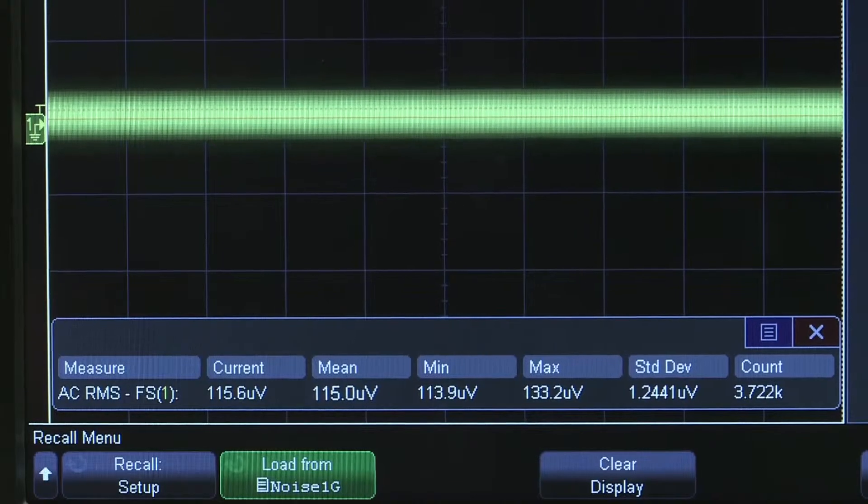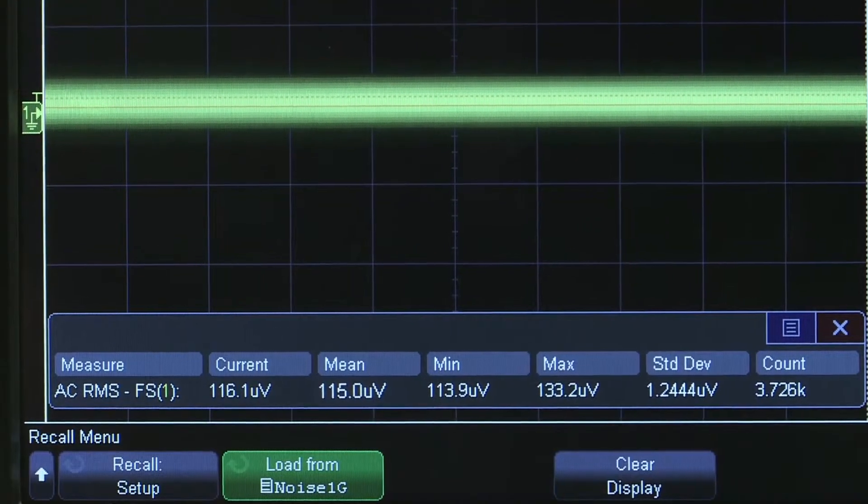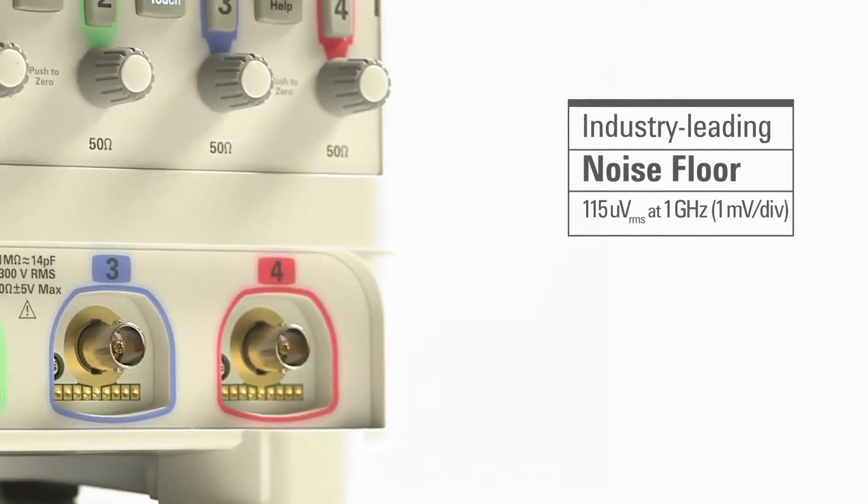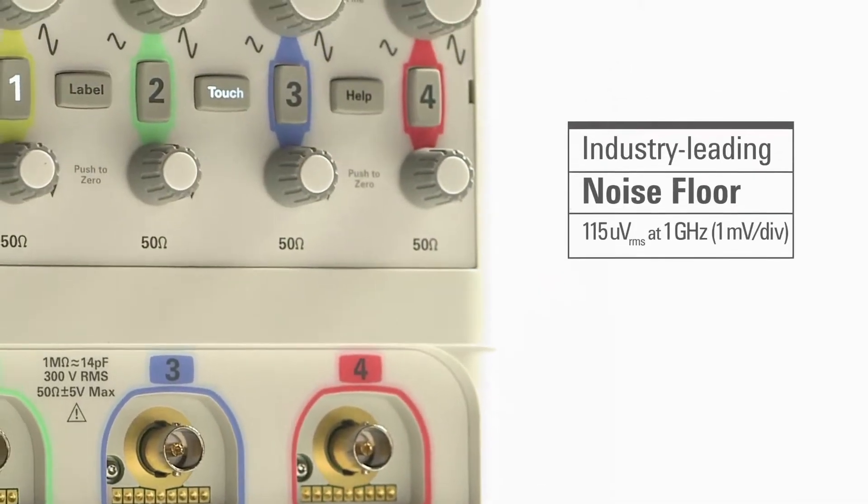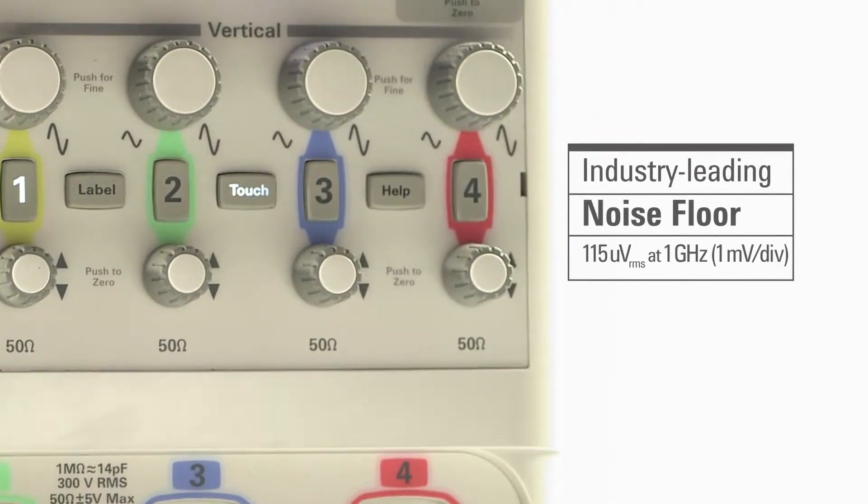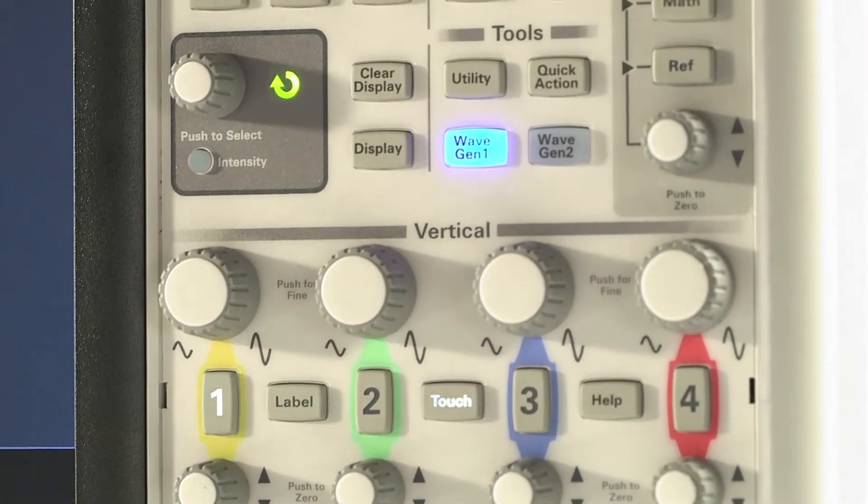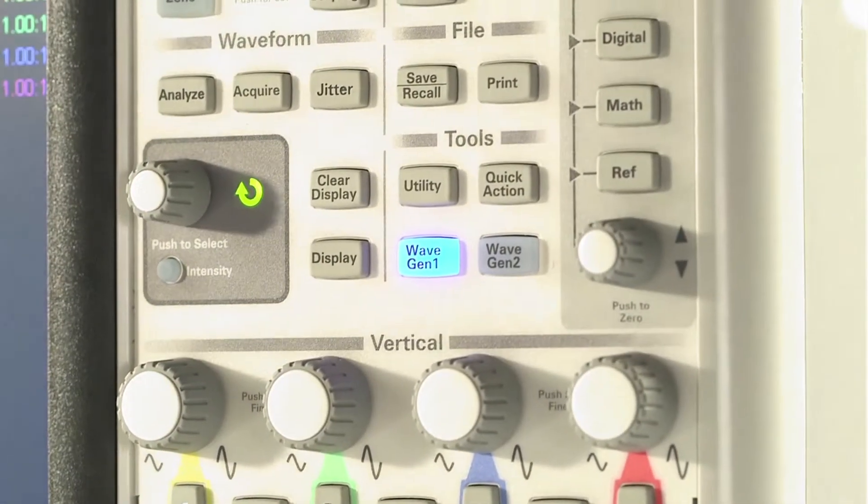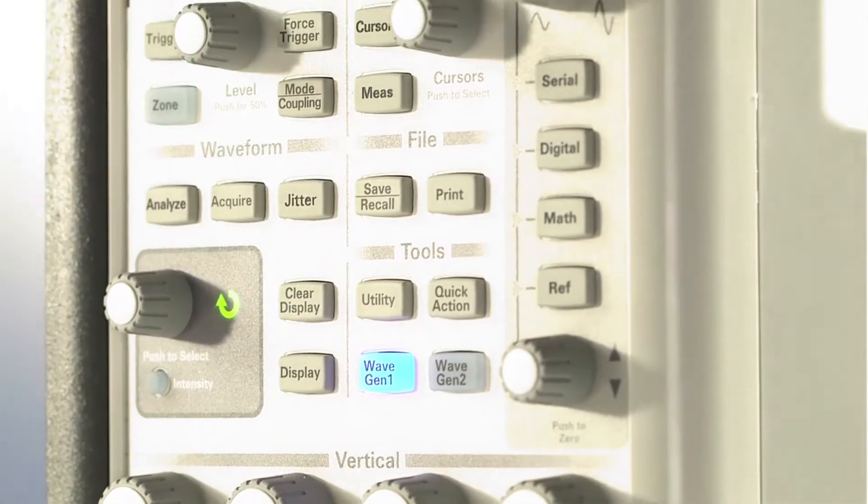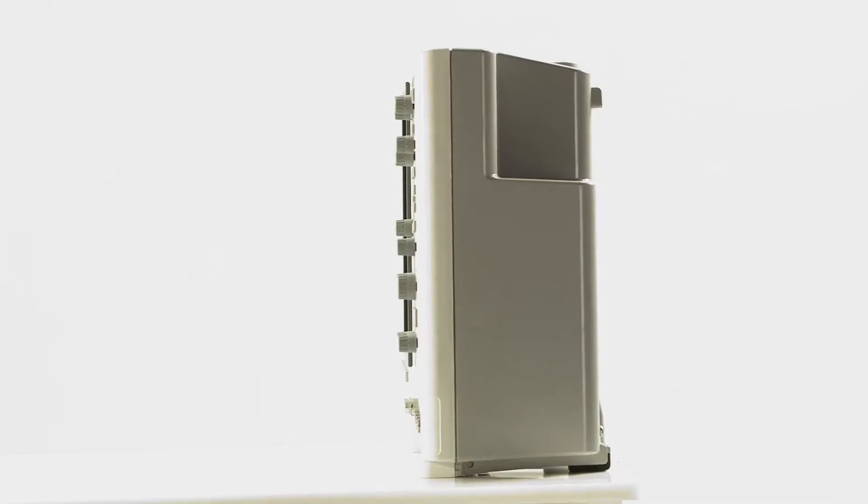The 6000X-Series also has an industry-leading noise floor. In this class of scopes, that's tremendously low noise. And it all comes in a superior form factor. At 15 pounds, it's 70% lighter than other 6 GHz scopes on the market, and it's only 6 inches deep.